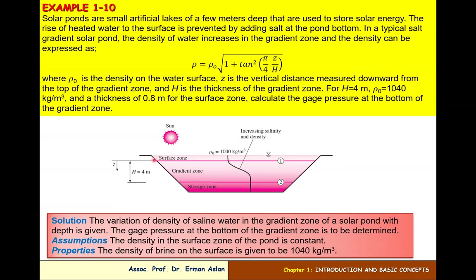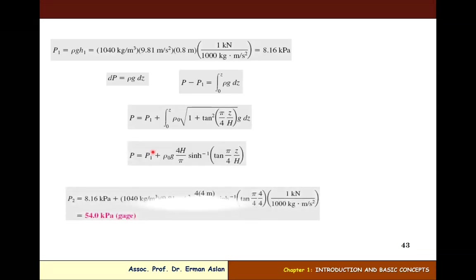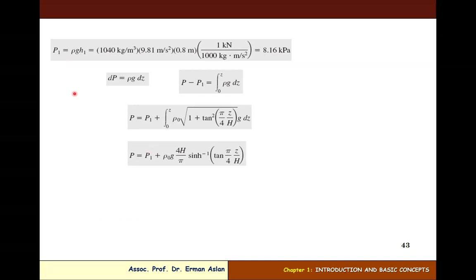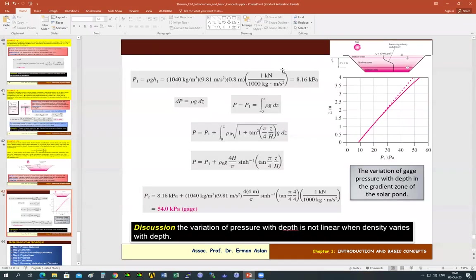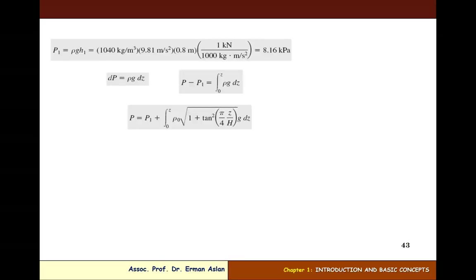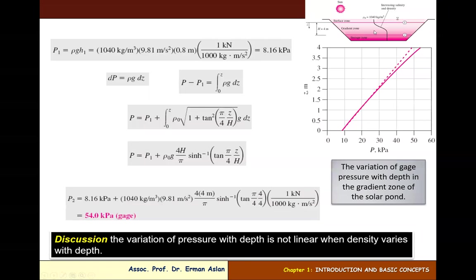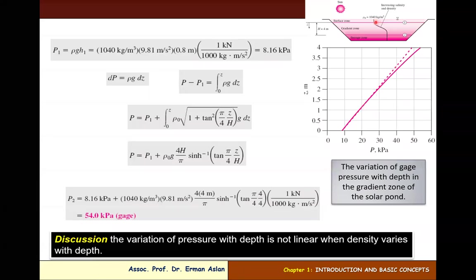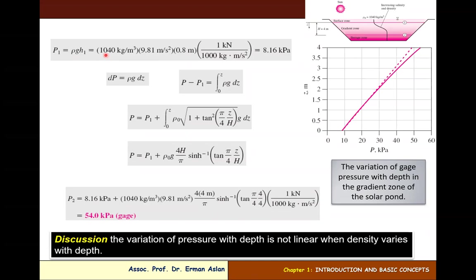Given: the gradient zone thickness H = 4 m, surface density ρ₀ = 1040 kg/m³, and surface zone thickness = 0.8 m. First, calculate P1 at the bottom of the surface zone: P1 = ρgH1 = 1040 × 9.81 × 0.8 = 8.16 kPa.